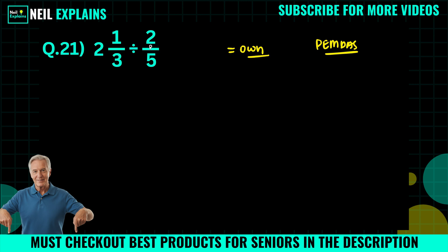We will write it in a simple way: 2 times 1/3 divided by 2/5. Or you can simply write 3 times 2 that is equal to 6 plus 1 equals 7/3 divided by 2/5. This is not a very odd type situation.